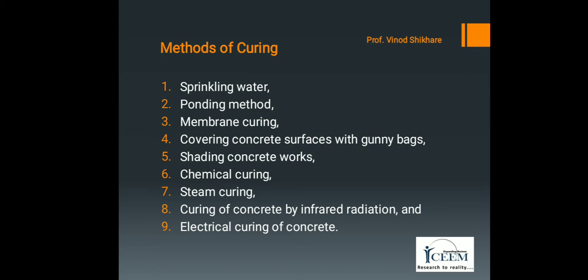The next method is membrane curing. Membrane curing is used at places where there is an acute shortage of water. In membrane curing, a newly laid concrete surface is covered by using chemical or liquid membranes in order to prevent the loss of moisture from concrete. This method has been found good in maintaining a satisfactory state of wetness in the body of concrete to promote continuous hydration when the original water-cement ratio used is not less than 0.5.